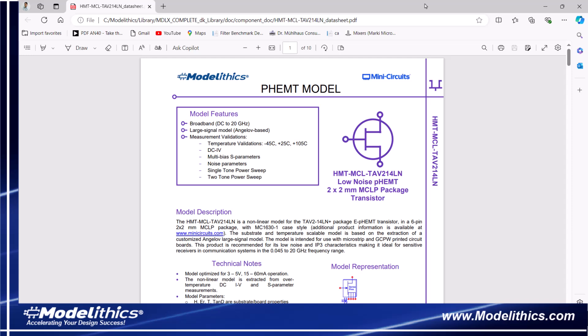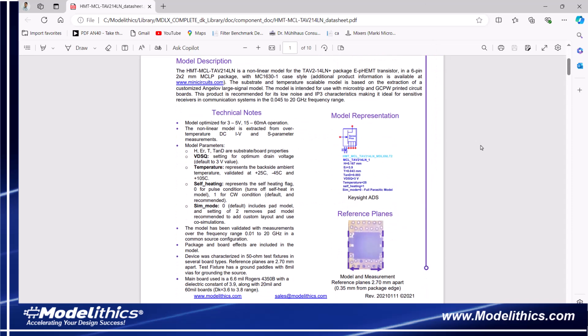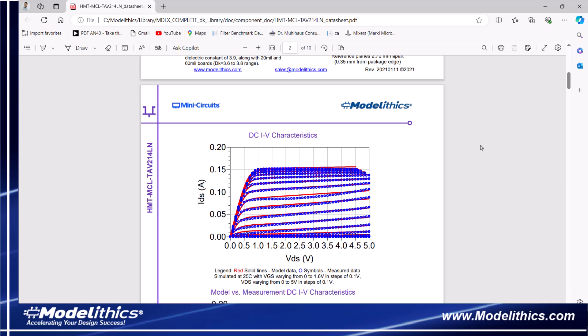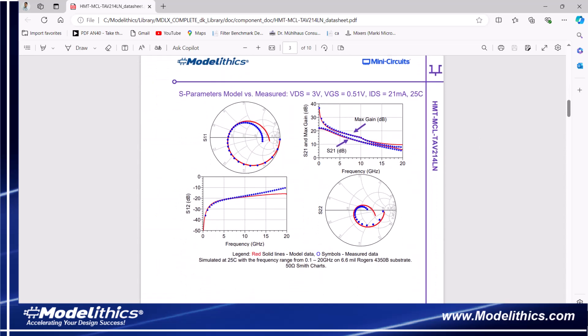Now the Monolithics model for this device is optimized for VDS values ranging from 3 to 5 volts and IDS values ranging from 15 to 60 mA. For this example, we'll go with a VDS of 3 volts and an IDS of 21 mA. VGS is 0.51 volts.